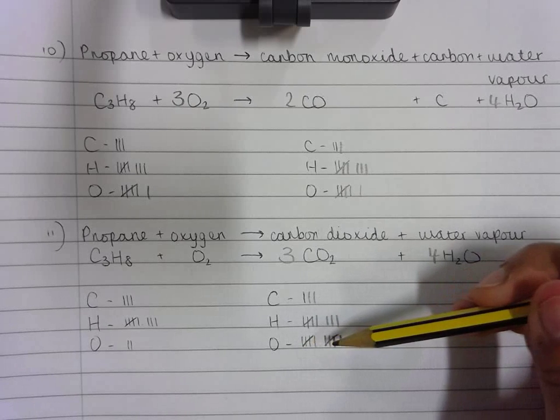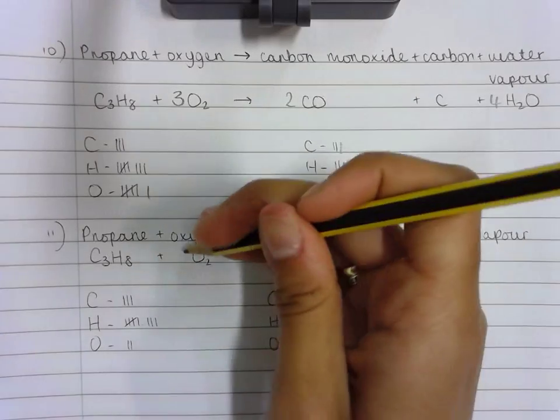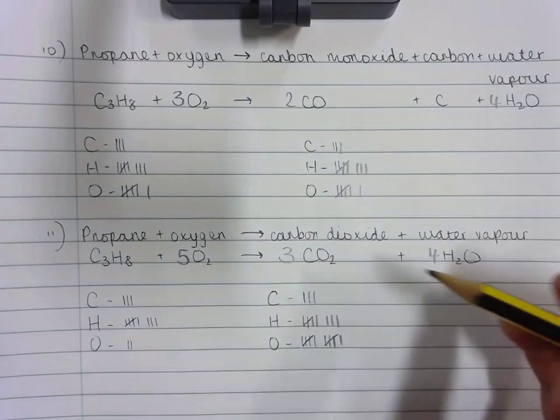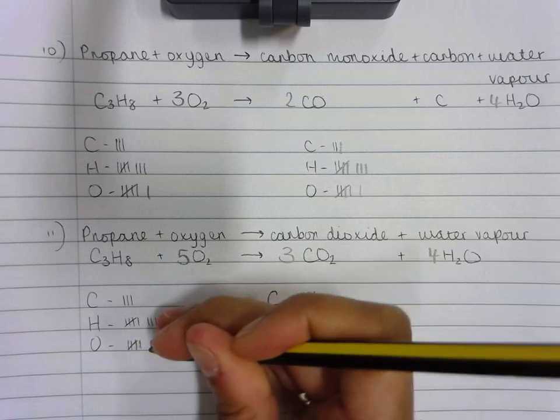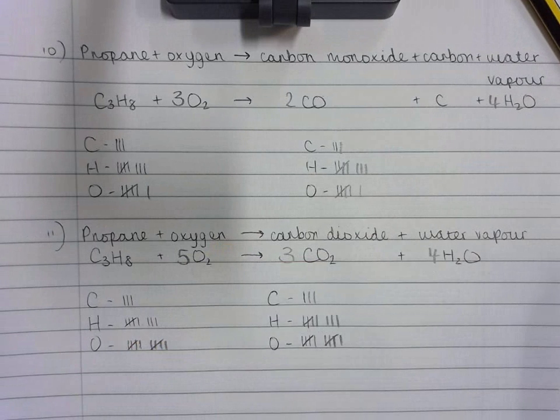Now to get the number of oxygen atoms up to ten on the reactant side, I need to put five in front of the oxygen molecule and retally. Five times two is ten: one, two, three, four, five, six, seven, eight, nine, ten. Ask, is it balanced?